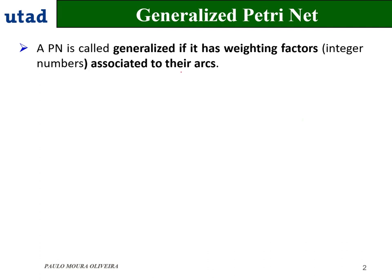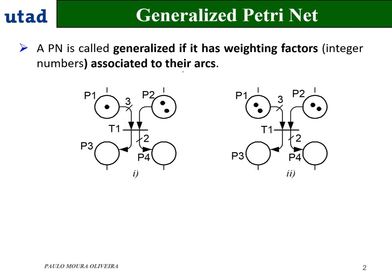We can call a Petri Net generalized if there are weighting factors associated to the arcs. These are integers, as you can see here — 3. Normally, in elementary Petri Nets, we got 1 as the weighting factor associated to each arc. In this case, we got different weighting factors.